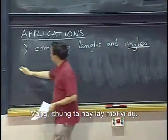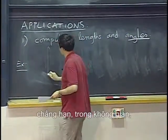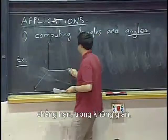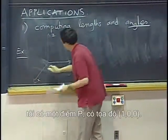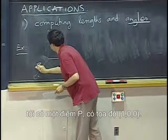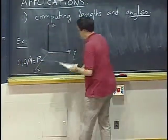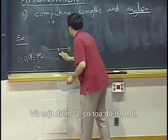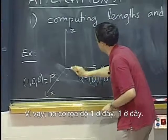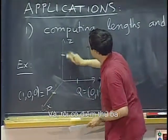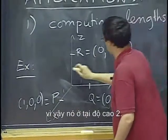So one is to compute lengths and angles, especially angles. So let's do an example. Let's say that, for example, I have in space, I have a point P which is at 1,0,0. I have a point Q which is at 0,1,0. So it's at distance one here, one here. And I have a third point R at 0,0,2. So it's at height 2.